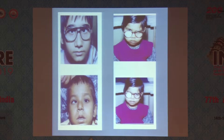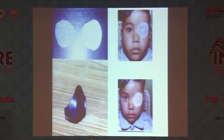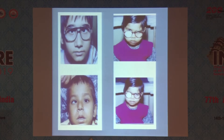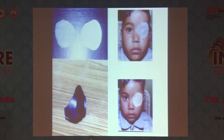Choosing the occluder is very important. As you can see in the top right figure, the child may peek around from the sound eye, so that should not be allowed. We advise complete patching as shown here — one commercially available patch at the bottom, and one can be homemade.